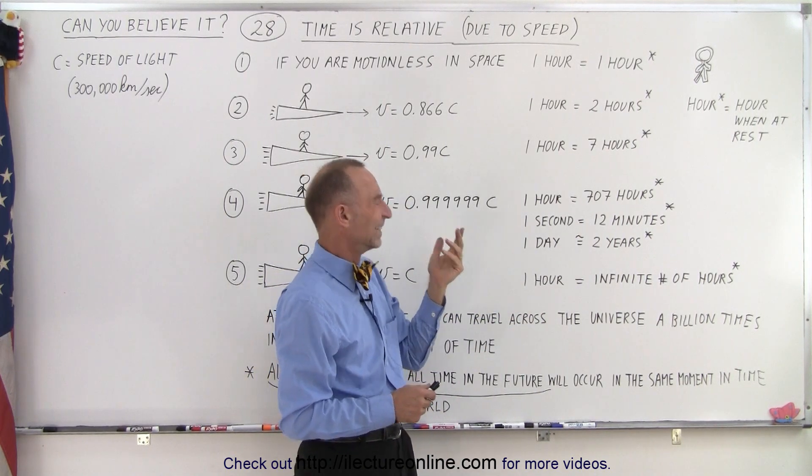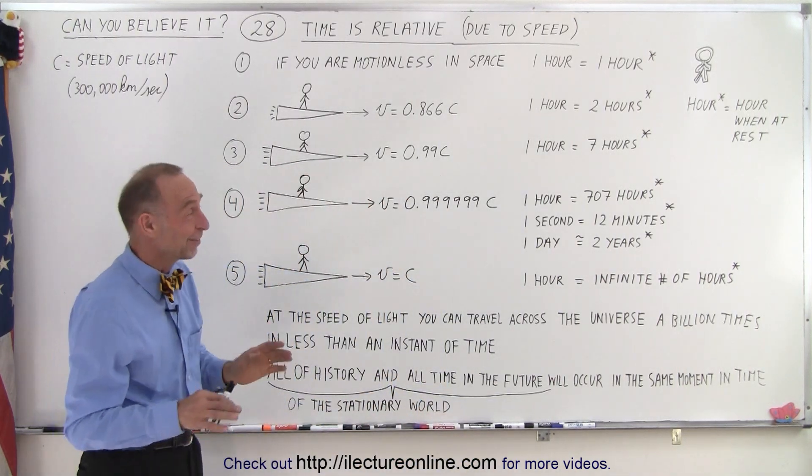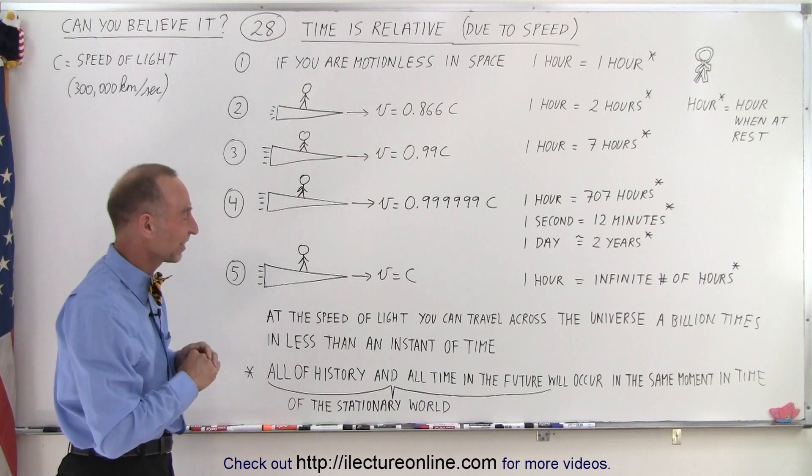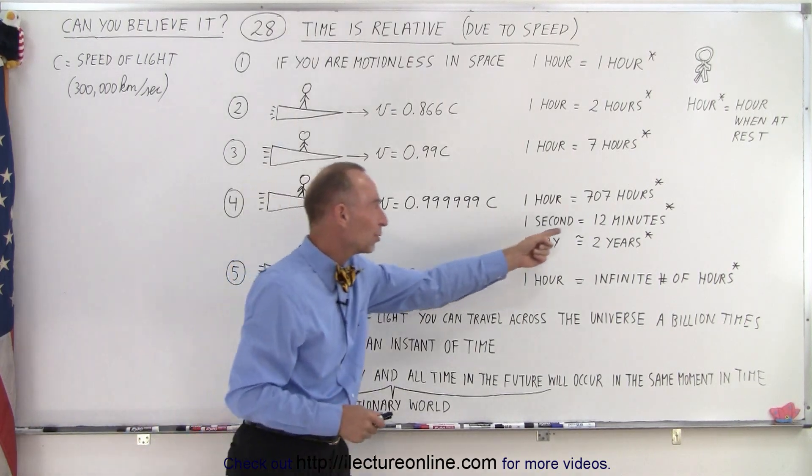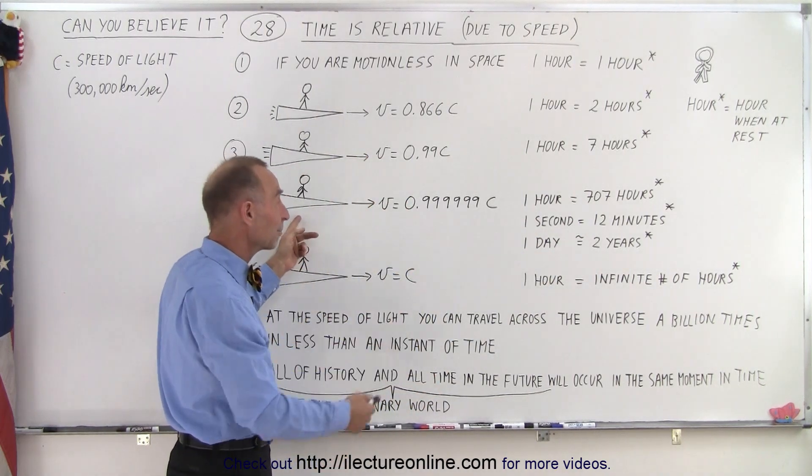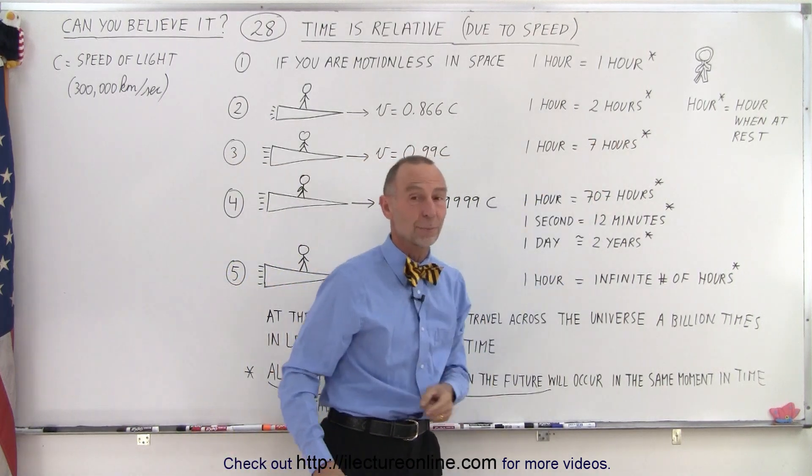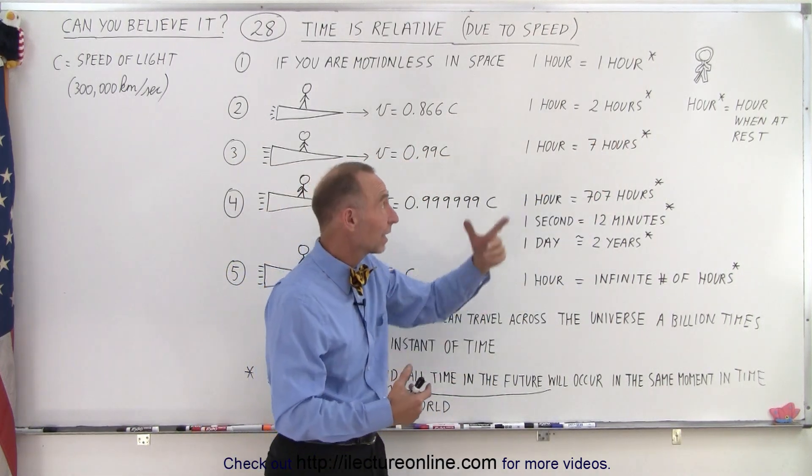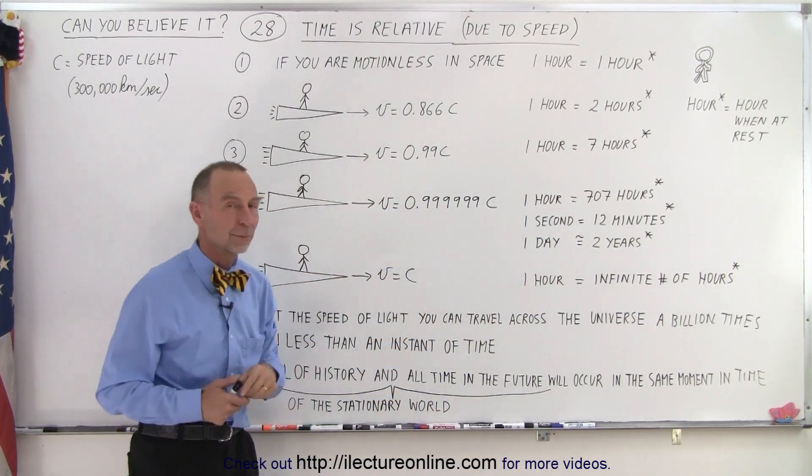My husband promised his wife he would call her in an hour. That's maybe what it seems like to my wife when I told her I'll call her in an hour. So, one second would be 12 minutes, and one day would be two years. For example, if I say, hey, I'll call you tomorrow at the same time, one day later, well, that will be two years later for this person. And that person would indeed get a phone call two years later when it was only one day later for this person.